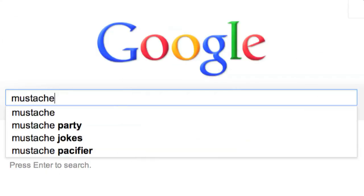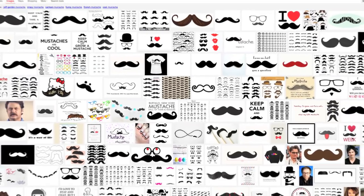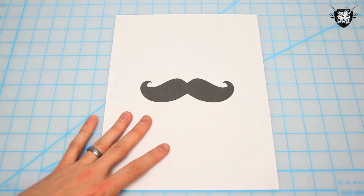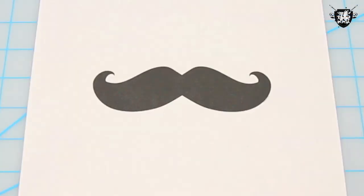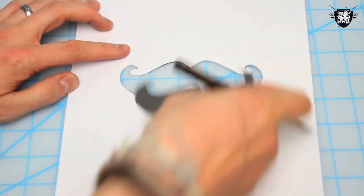First, Google image search mustache. Pretty simple. Pick out your mustache and print out your bowtie sized image. This one runs about 5 inches in length. Using an exacto blade or some scissors, cut it out.